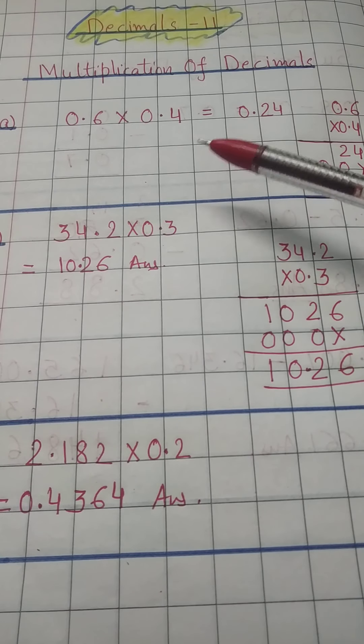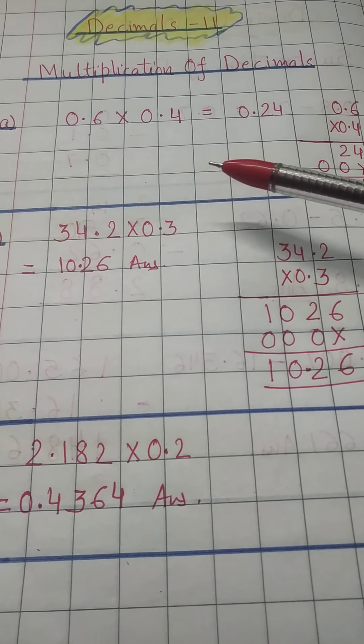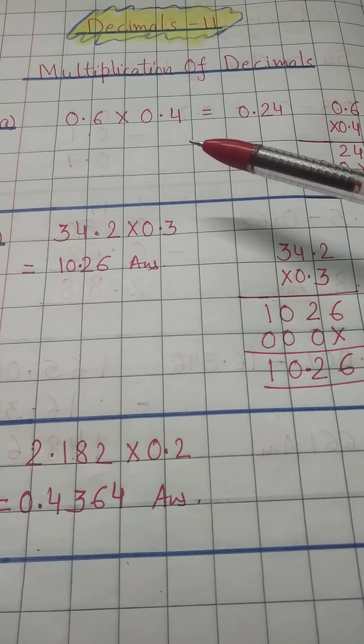We will do 4 times 6 equals 24. In decimal you have to keep in mind after multiplication you have to put the decimal place properly.